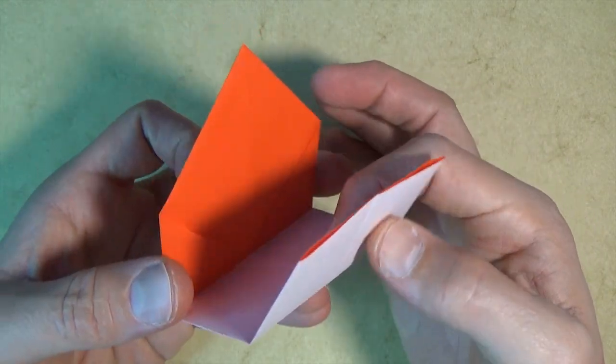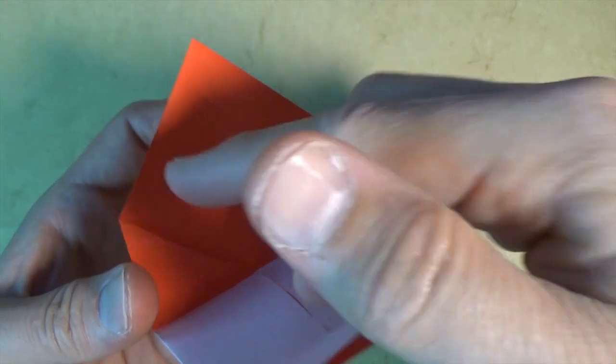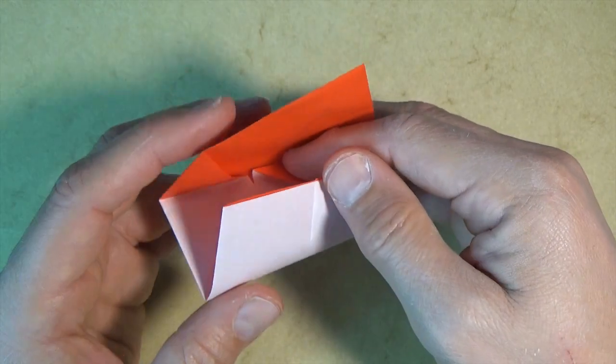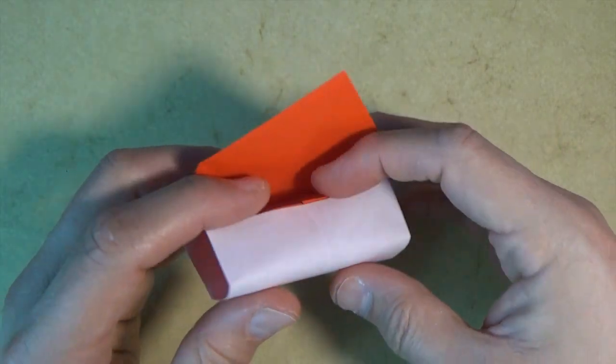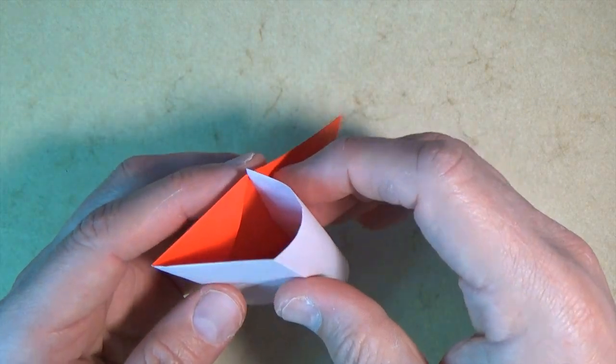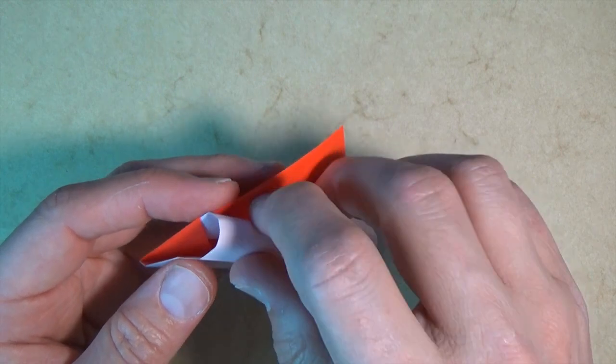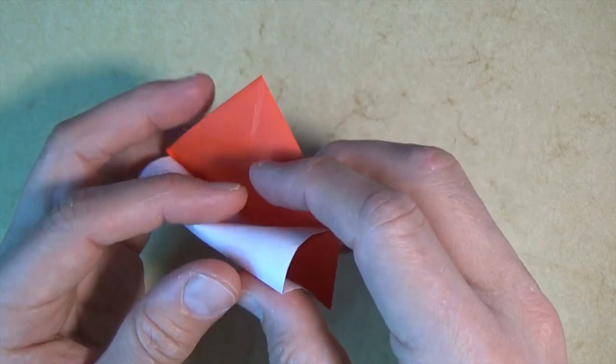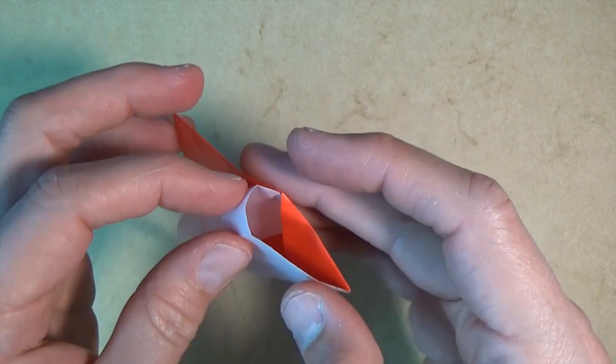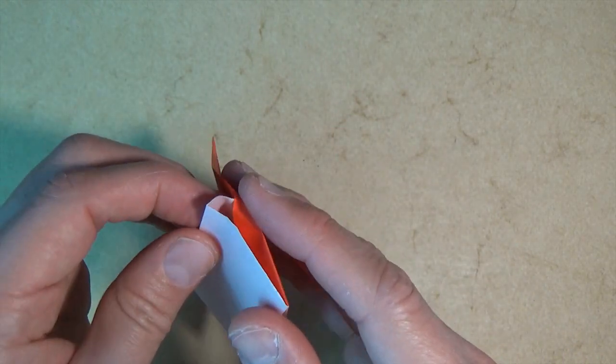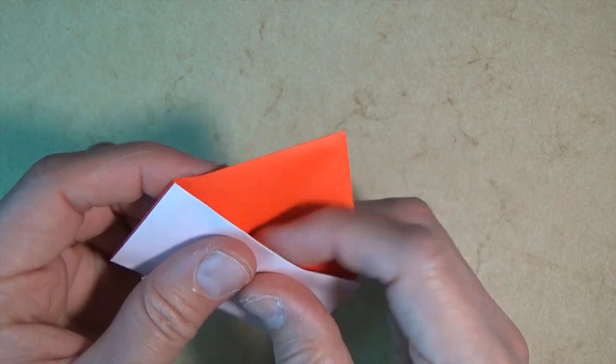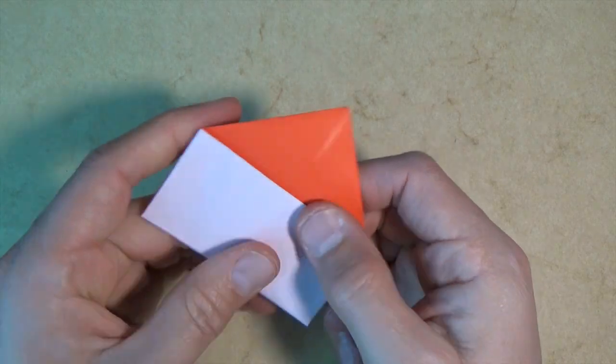And now comes the tricky step. We're going to insert this flap into these pockets right here. So it has to go in. And to make it go in, let's first curve it a little bit. So that'll make it easier to go in. And now you just want to slide it into the pockets. So just slide it right into the pockets. And just coax it in. Like that. And like that.